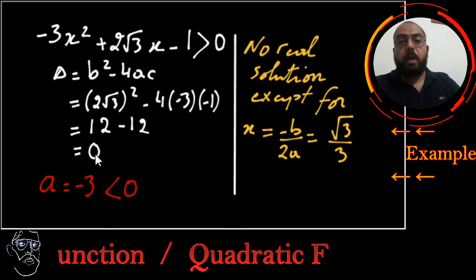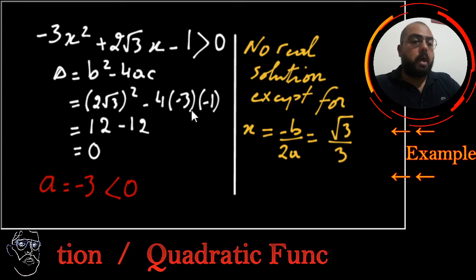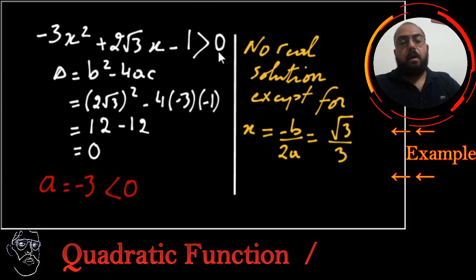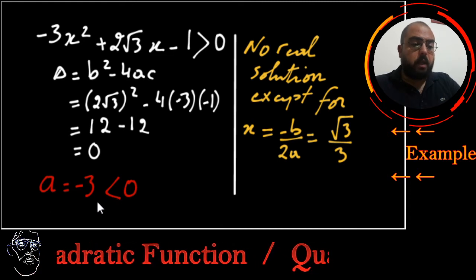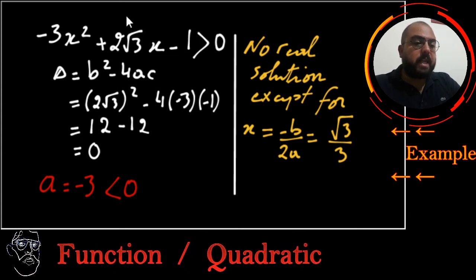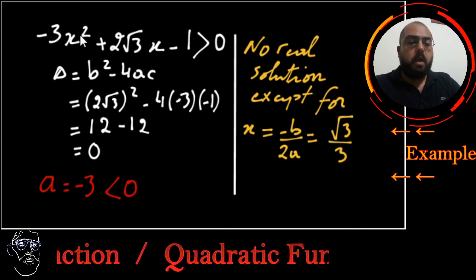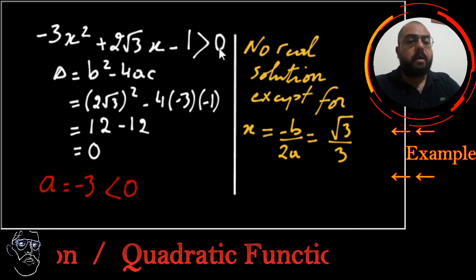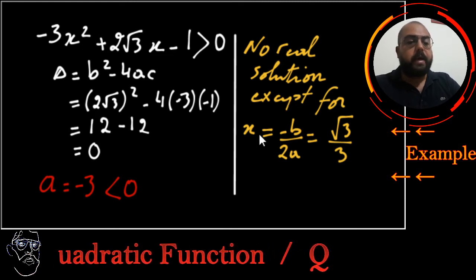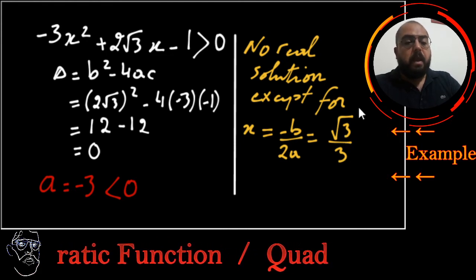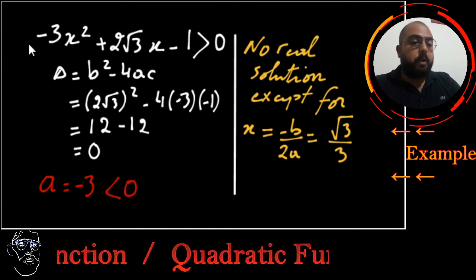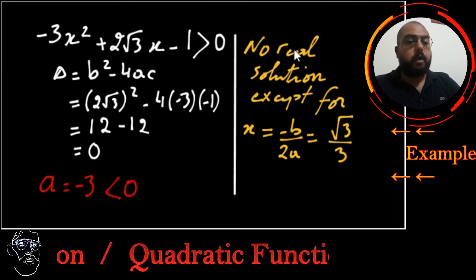What does delta = 0 mean? I have one real double root. But I'm not looking to find the double root — I'm looking for the values of x which give me a positive solution. So I will check the sign of a. a is -3, it's negative, so this whole polynomial will have the same sign as a, which is negative. If this polynomial is always negative, I cannot have any real solution. So no solution, except for x = -b/2a = √3/3, but at that value it equals 0 and I'm looking for strictly positive. Therefore no real solution.